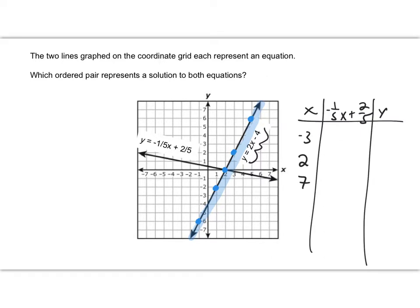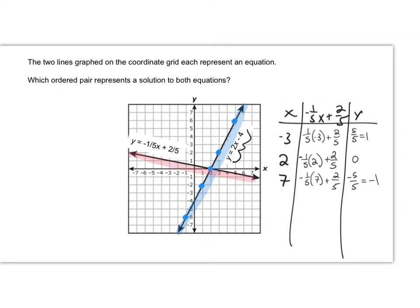So now I'm going to use the same process with my other equation, negative 1 fifth x plus 2 fifths. So let me highlight the line that I'm talking about, and then I've got three ordered pairs to graph here.